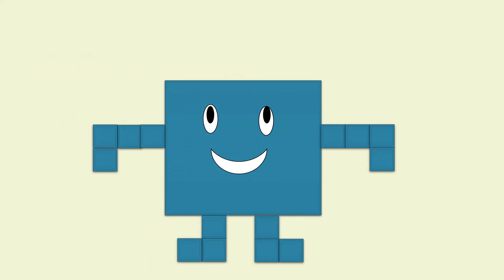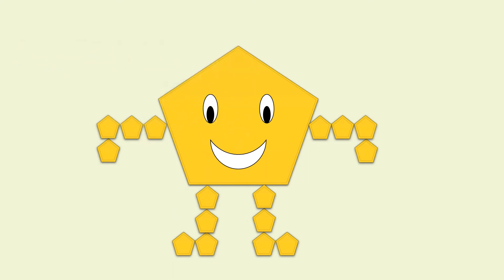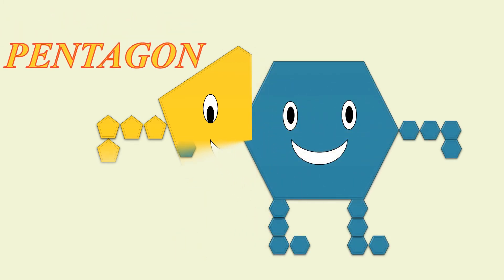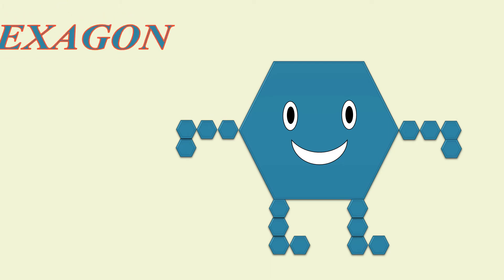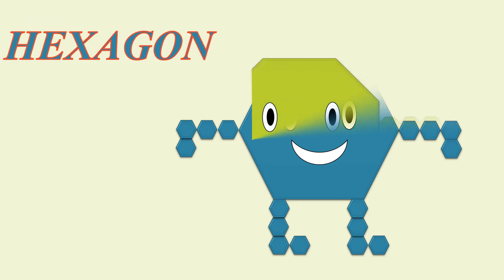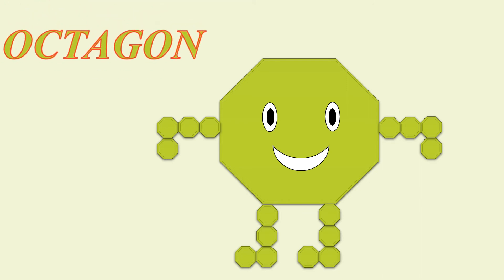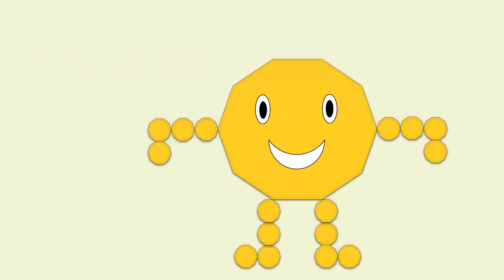What shape is this? It's a square. What shape is this? It's a pentagon. What shape is this? It's a hexagon. What shape is this? It's an octagon. What shape is this? It's a decagon.